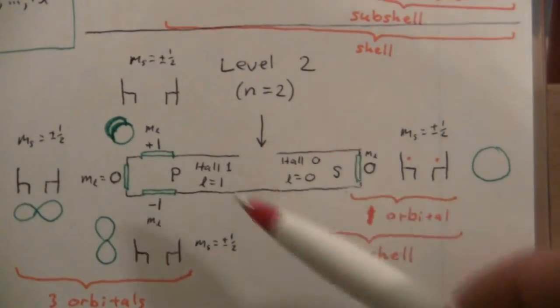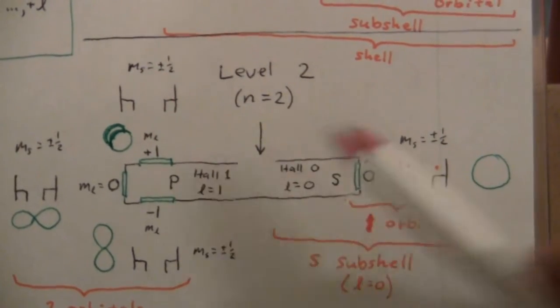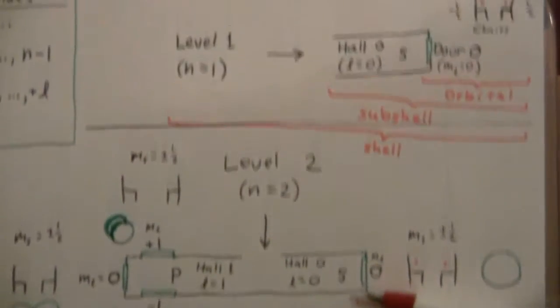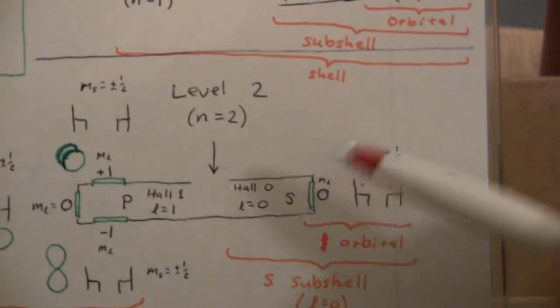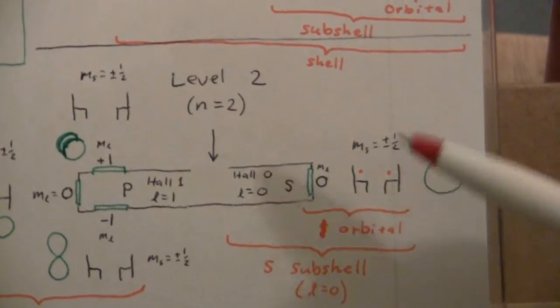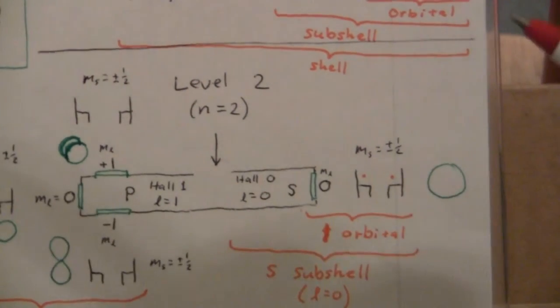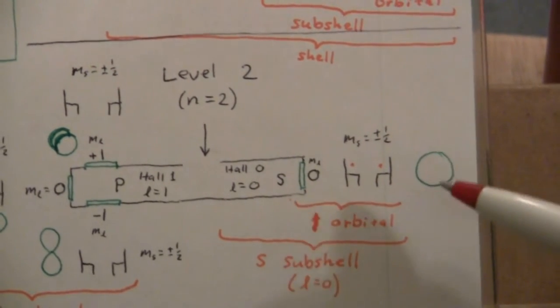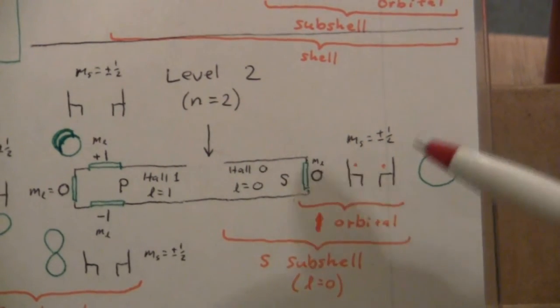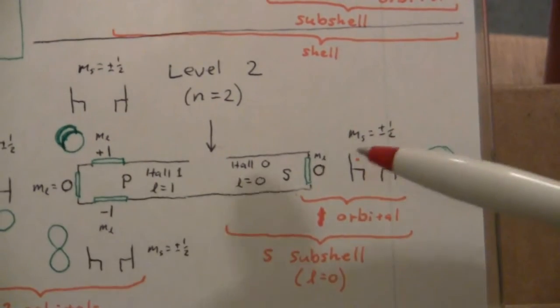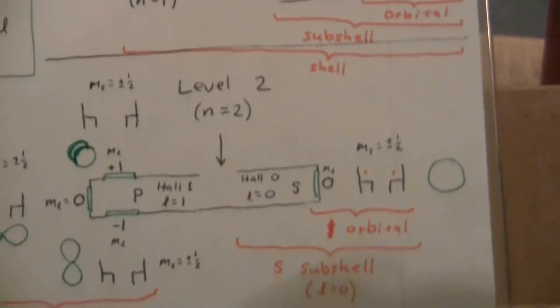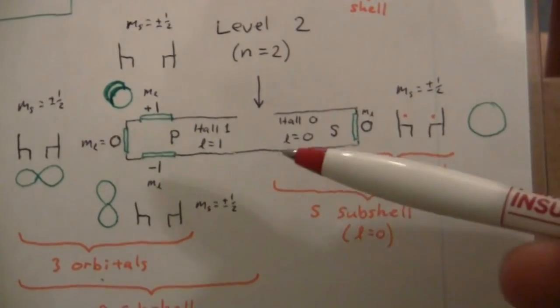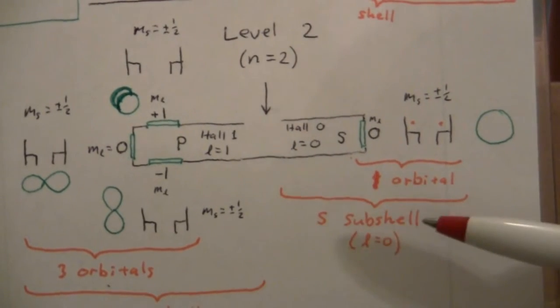Now, you'll notice the hall zero, or the S wing, if you will, it looks just the same as level one. Has that one door at the end of the hallway. And within that room of that door, that's the one orbital there. There are the two chairs for two electrons. Now, I've drawn this circle or really representing a sphere. That's the shape of the S orbital. It's a sphere that contains those two electrons. Likewise, up here, the S orbitals are spheres. So this wing is the S wing. That's the S subshell in the atom when L equals zero.